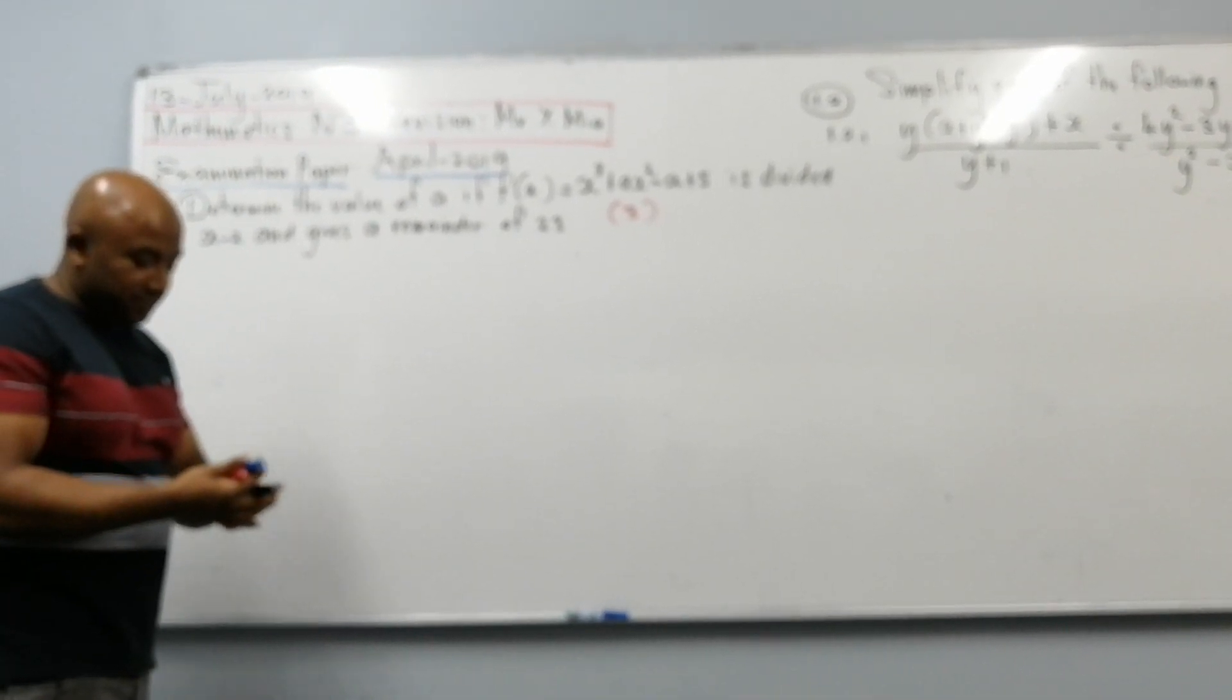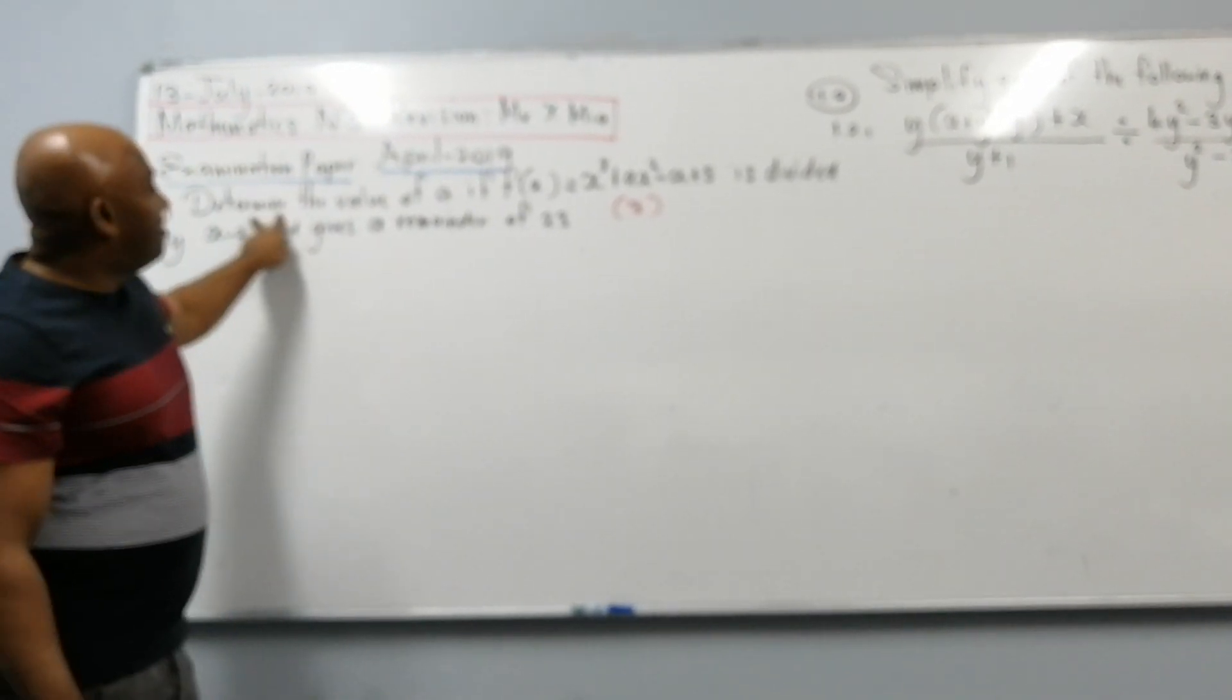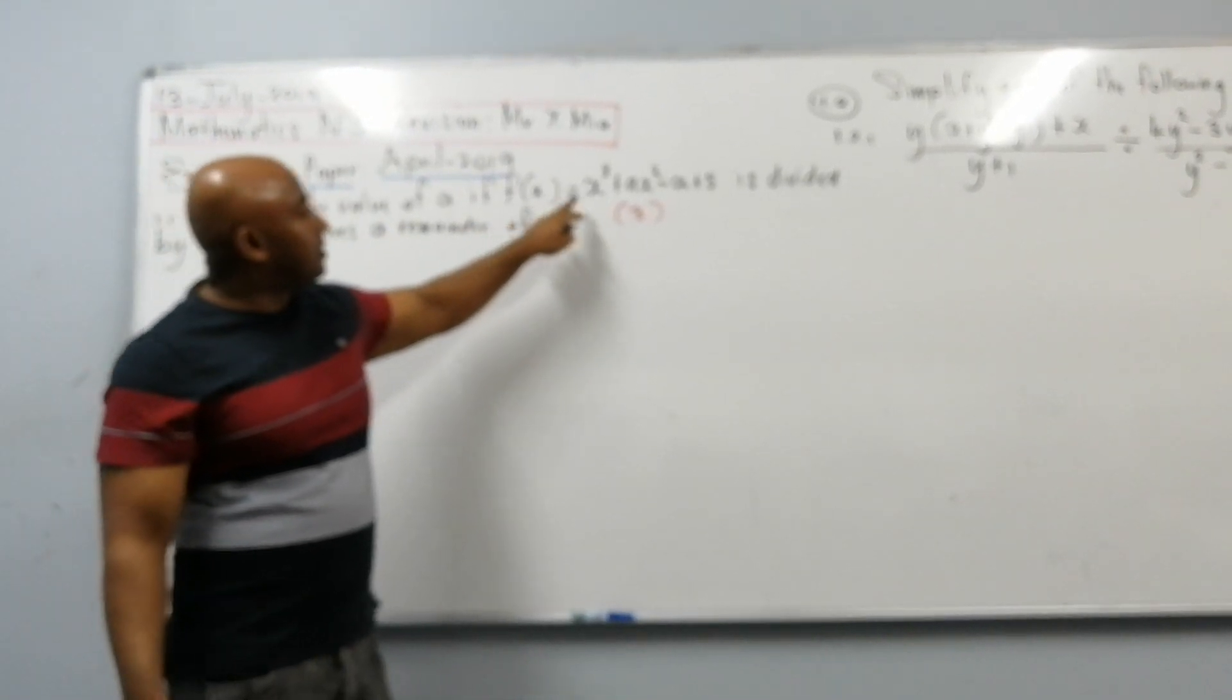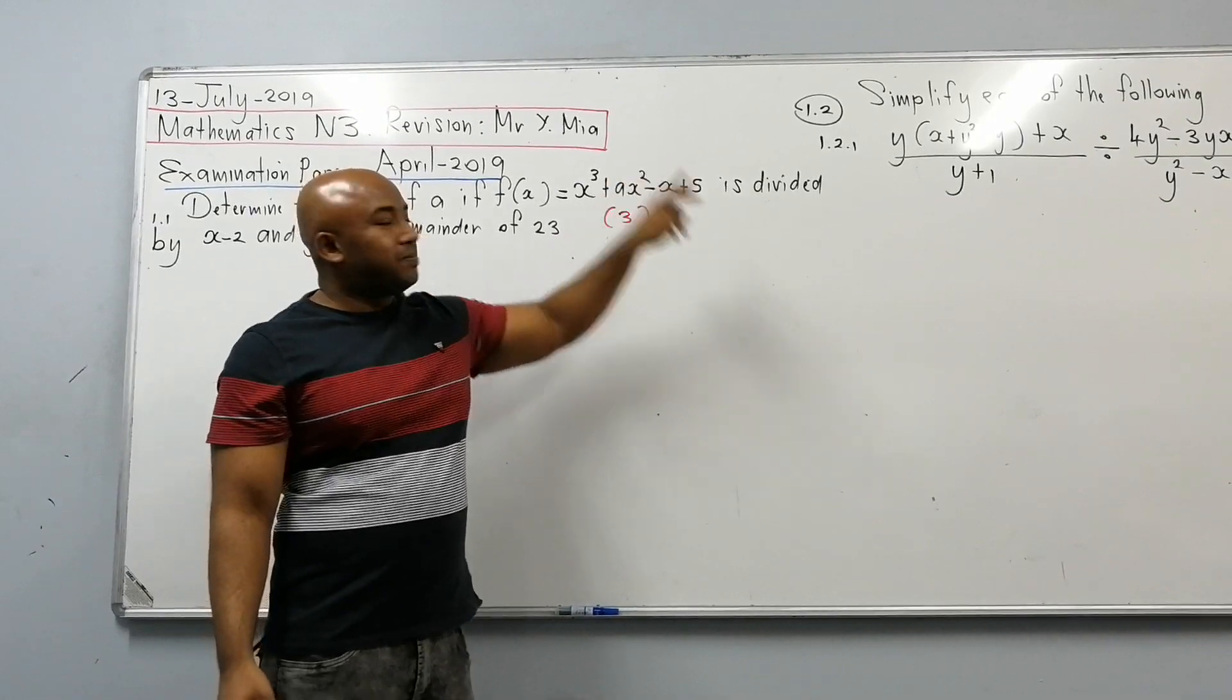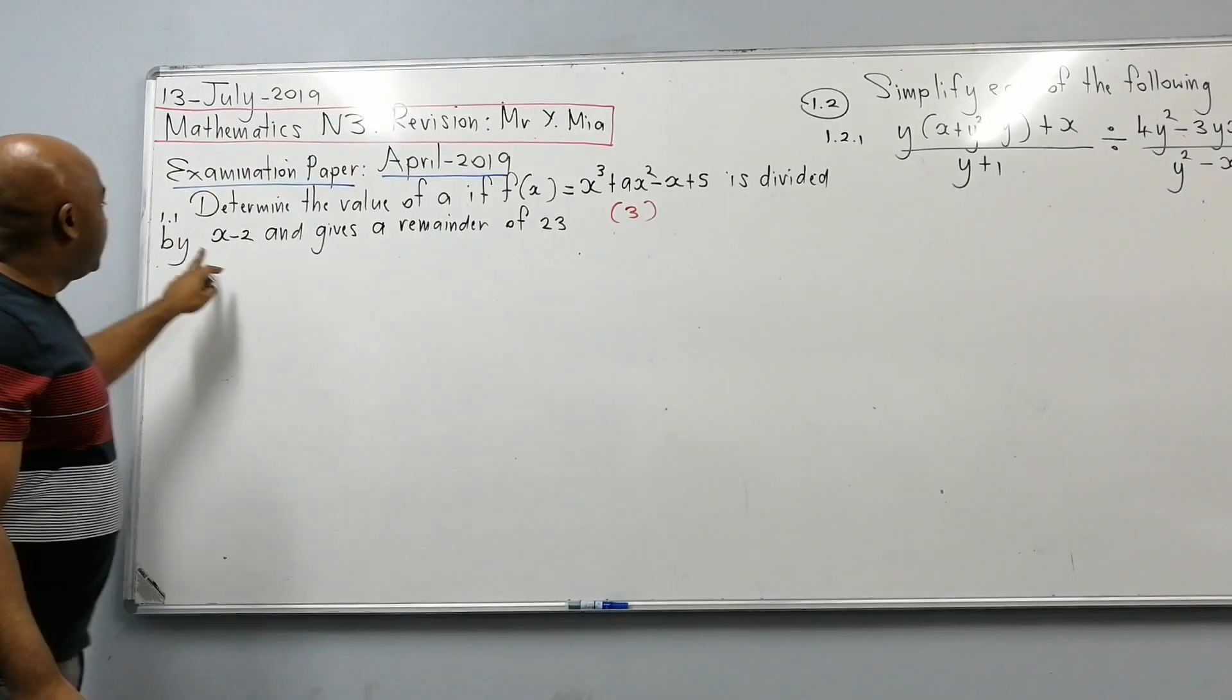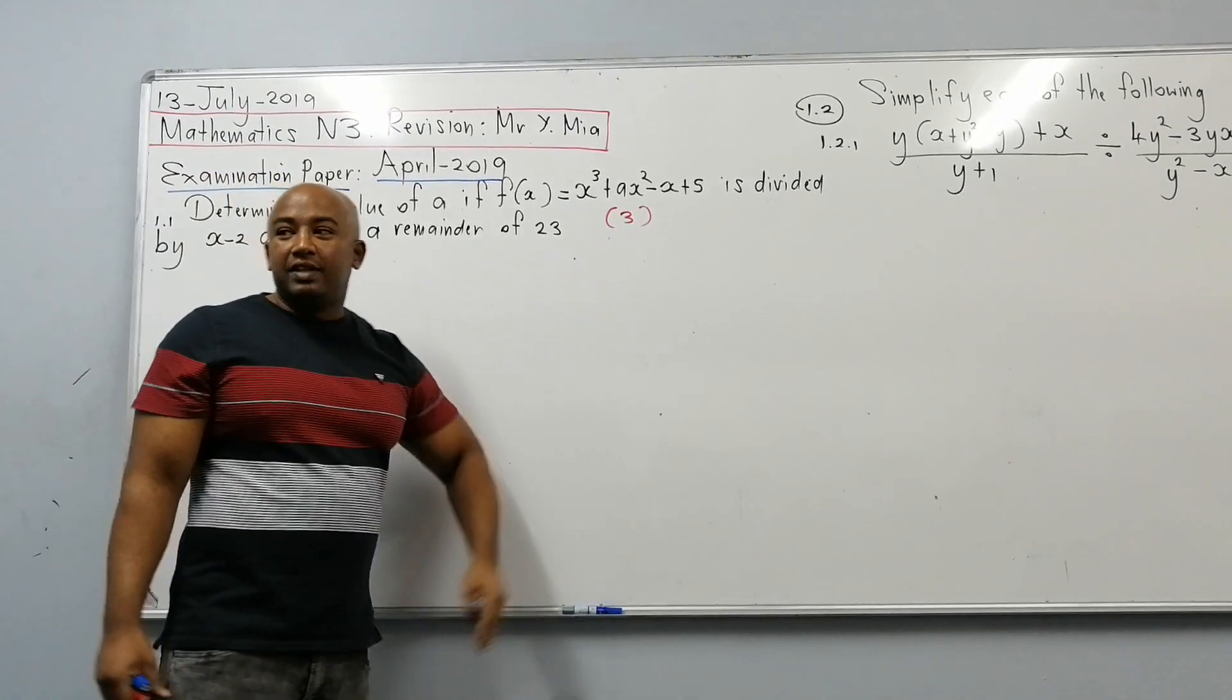Let's deal with the easy one first. I'm sure everybody will be able to work this out quickly. We determine the value of a in half of x is equal to x cubed plus ax squared minus x plus 5 is divided by x minus 2 and gives the remainder of 23. It's only 3 marks here.